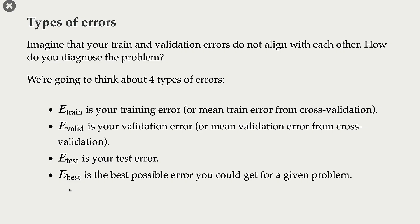E-best is the best possible error. The idea is that, suppose you are given the full data distribution — what would the error be? In supervised machine learning, we are not usually given the full data distribution; we only have access to a sample. In real life, you can never calculate E-best because you never have access to the full data distribution, so this is kind of an imaginary error.